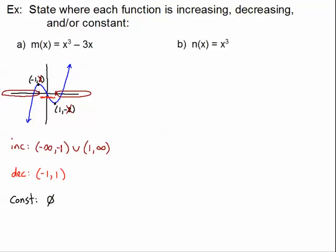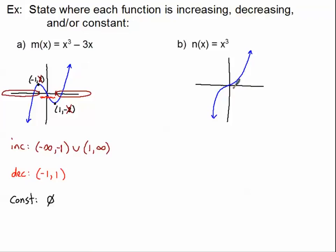Our second one — I've seen this graph plenty of times, you can check it on your calculator — y equals x³ is simply this curve right here. I don't see any maxima or any minima. I don't see any point in the graph where I'm starting to come back down at all. It looks like I'm increasing the entire way. I'm interested to see what happens at zero, but after that I definitely know that I'm increasing.